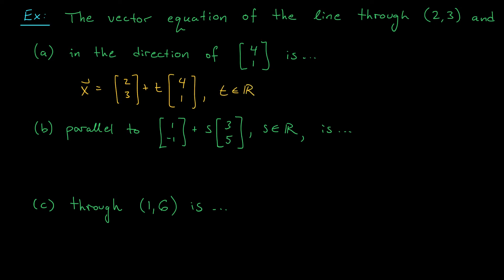Okay, for part B, we're looking for a line that passes through 2, 3, and is parallel to this line. This is a line that passes through 1, minus 1, and moves in the direction of 3, 5. Well, let's think about this. If our line has to be parallel to this one, they're going to be moving in the same direction. They just pass through different points. That means that our line must pass through 2, 3, and moves in the direction of 3, 5. So, just like before, we get an equation X equals 2, 3, plus T times 3, 5, and T here belongs to the real numbers.